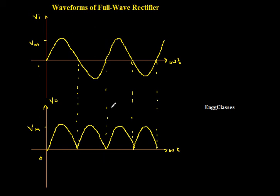A possible doubt one can ask is: during the negative half cycle, shouldn't I have got a negative waveform? So why am I still getting a positive half cycle? If that is the doubt, the reason is because of the transformer.